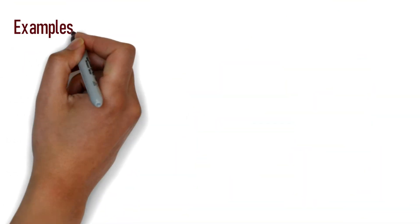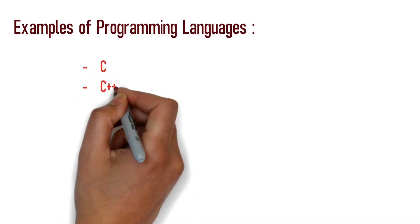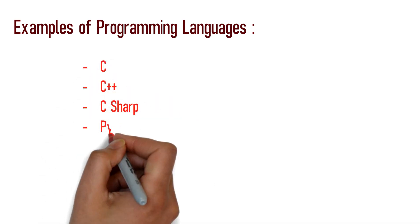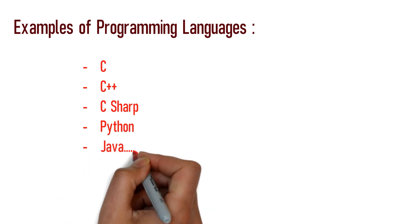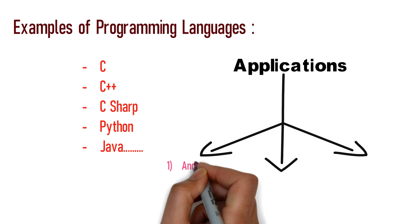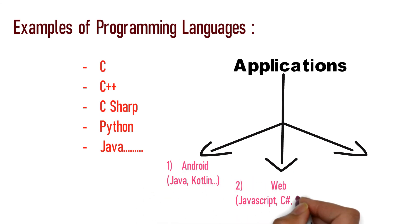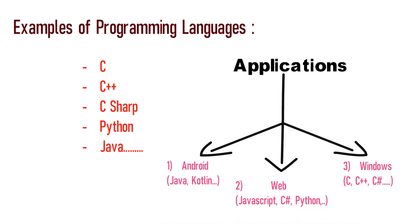There are examples of programming languages. There are many languages used in real time. Some examples are: C, C++, C Sharp, Python, and Java. There are many more programming languages available.